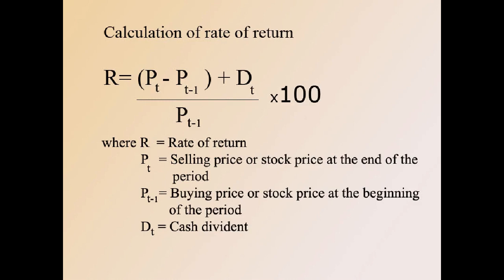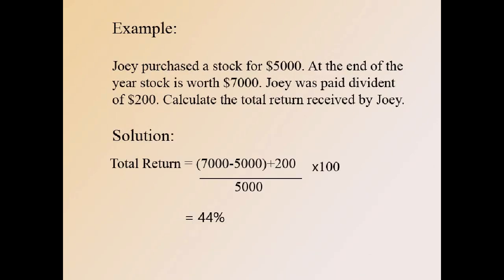We can calculate the return on an investment using this formula: R = (Pt − Pt-1 + Dt) / Pt-1 × 100, where R is the rate of return, Pt is the selling price or stock price at the end of the period, Pt-1 is the buying price or stock price at the beginning of the period, and Dt is the cash dividend received during the year.